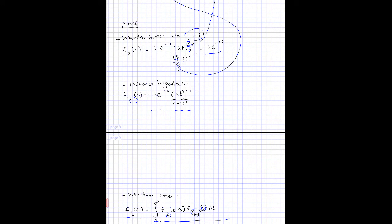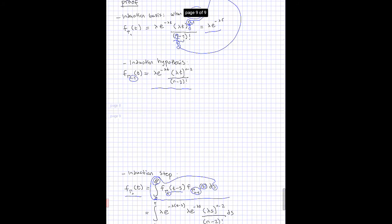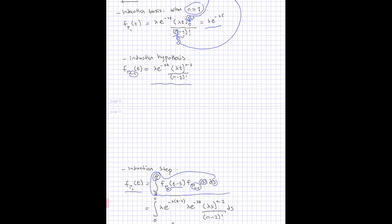Since we know that n minus 1 equals s, the time left for the last exponentially distributed random variable is equal to t minus s, and s can be anything from 0 to infinity. We replace this expression with our induction hypothesis, and the probability density function for the additional exponential random variable is evaluated at t minus s.